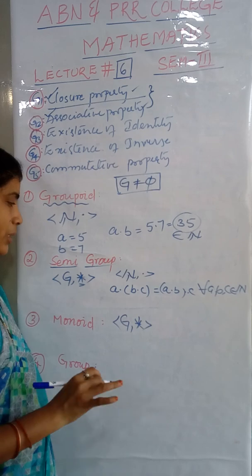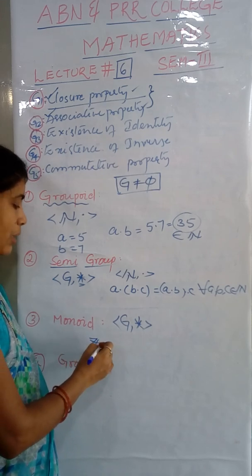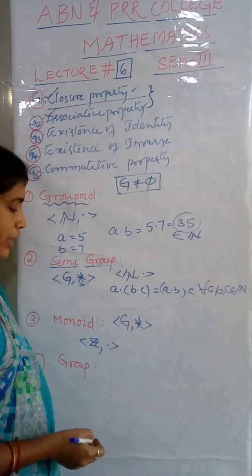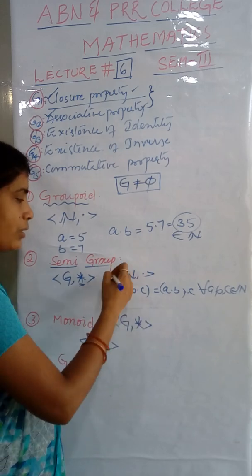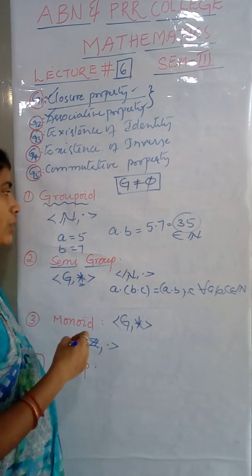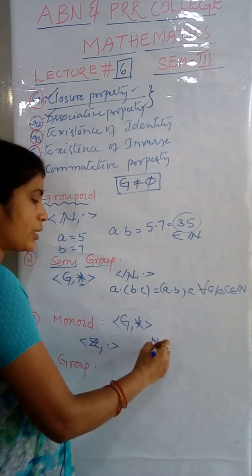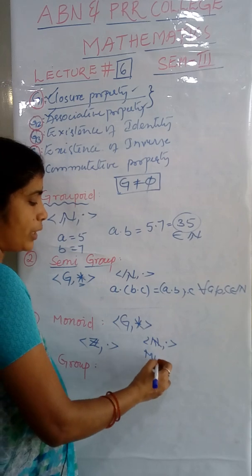For example, you may consider Z, dot. It is a monoid, evidently. And then N, dot you may consider because already we verified that in N closure property and associative property hold. So we can consider N, dot. It is a monoid.